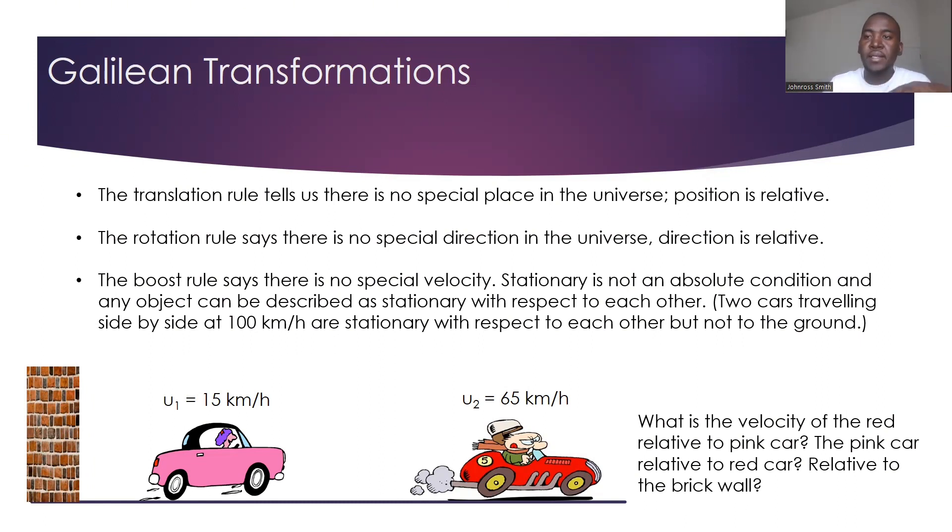We have a reference frame that is the brick wall, if it's stationary, we now have the pink car reference frame, which is moving at a specific 15 kilometers per hour speed. And then we have the red car that is of a different speed, so it's a different reference frame of 65 kilometers per hour.